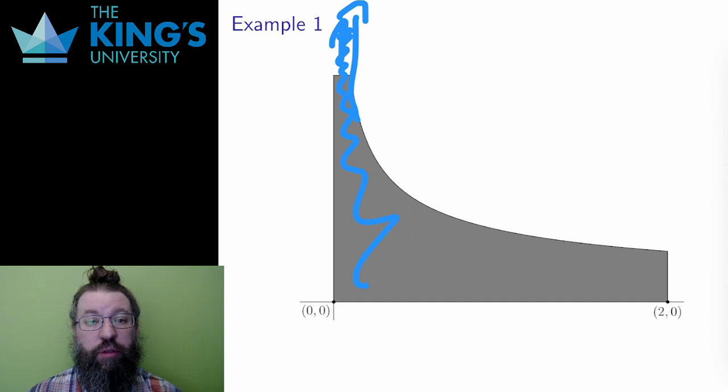The function has an infinitely tall spike, but it is so close to the axis that the area still adds up to only a finite number. Strange, but valid.